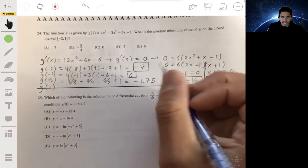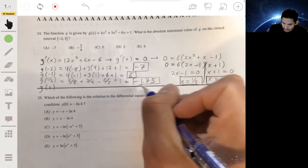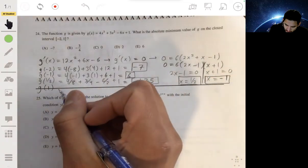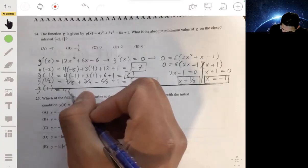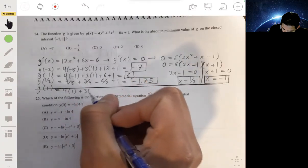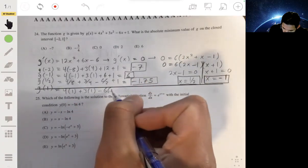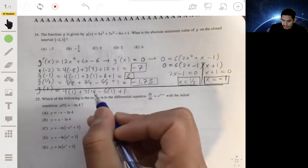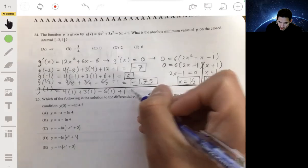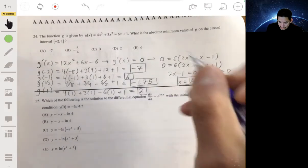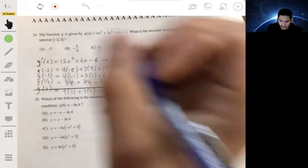And g of 1: four times 1 plus three times 1 minus six times 1 plus 1, that's 4 plus 3 minus 6 plus 1, which is 2. So we can already tell negative 7 will be our absolute minimum.